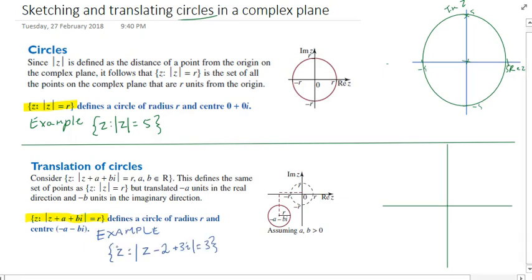Quick example, alright. So example: |z - 2 + 3i| = 3. So we know it's going to have a radius of 3, but that's not a good place to start.